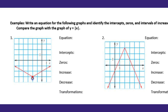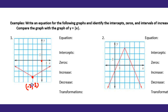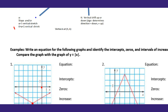Our vertex — remember that is the maximum or minimum; in this case it's the minimum. This is (0,0), so from (0,0) we go left 1, 2 and then down 1, 2, 3. So this point is going to be (-2, -3).